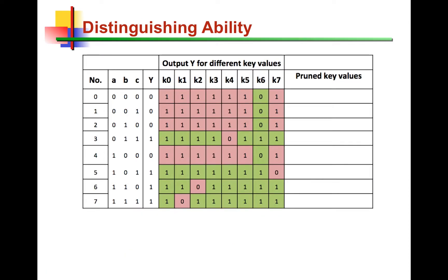How effective is the SAT attack? It depends on how powerful the DIPs are in distinguishing incorrect keys from the correct key. In this example, we have a simple circuit with three inputs ABC, a single output Y, and it has been logic locked with three key bits, meaning there are eight possible values for the key. K6 is the correct key value, as seen by the all-green entries under the K6 column, where the design produces correct outputs. All other key values are incorrect keys.